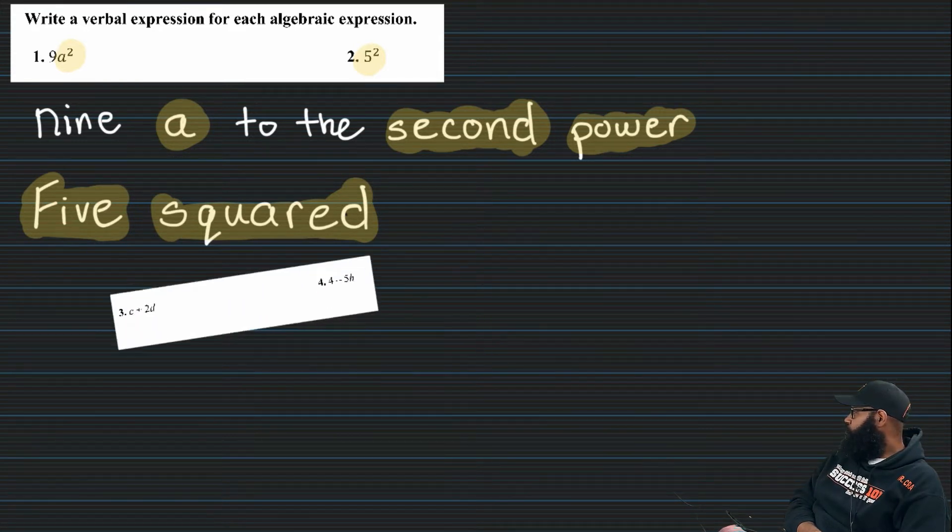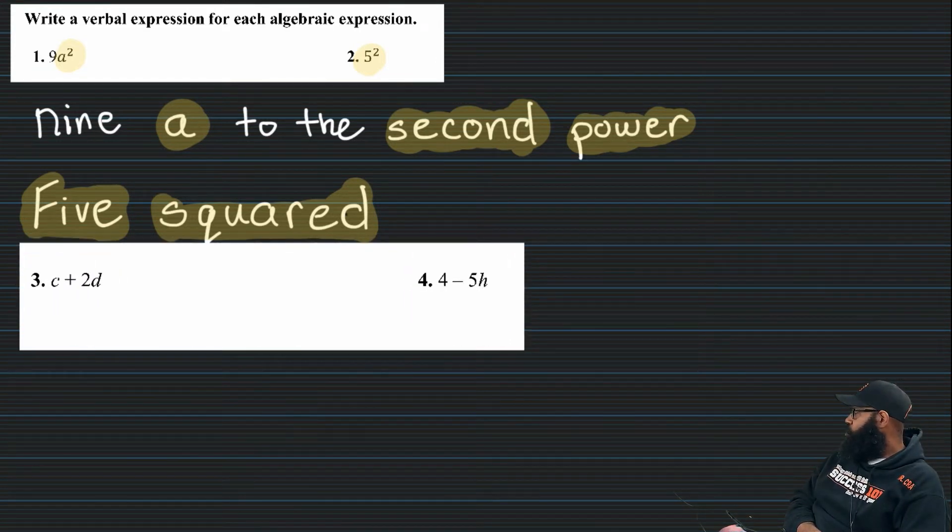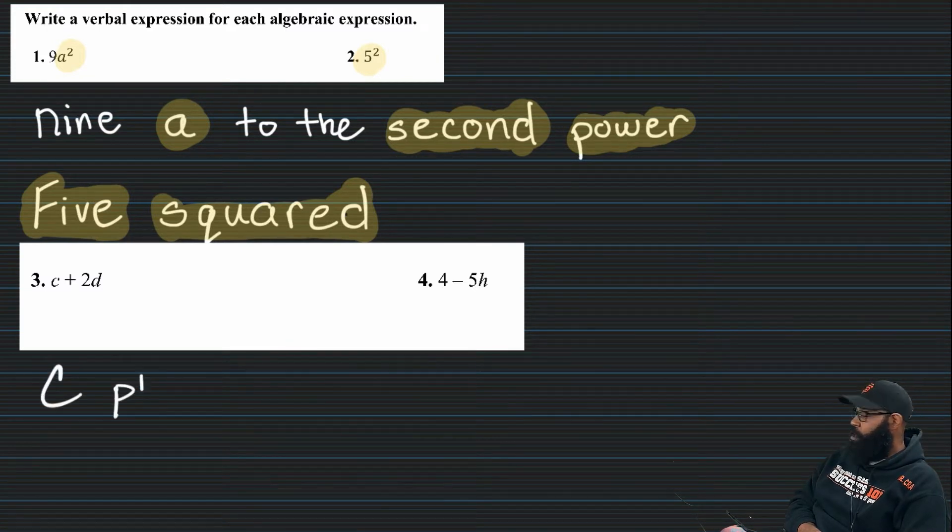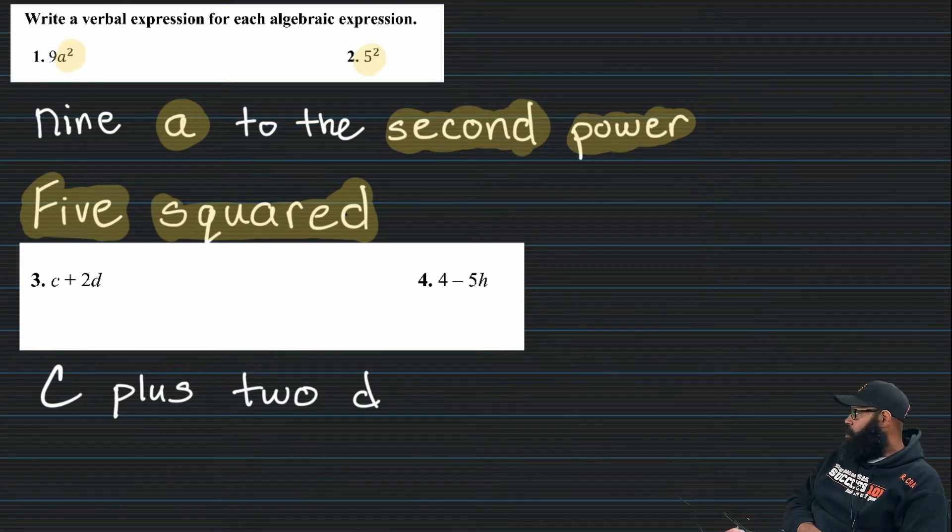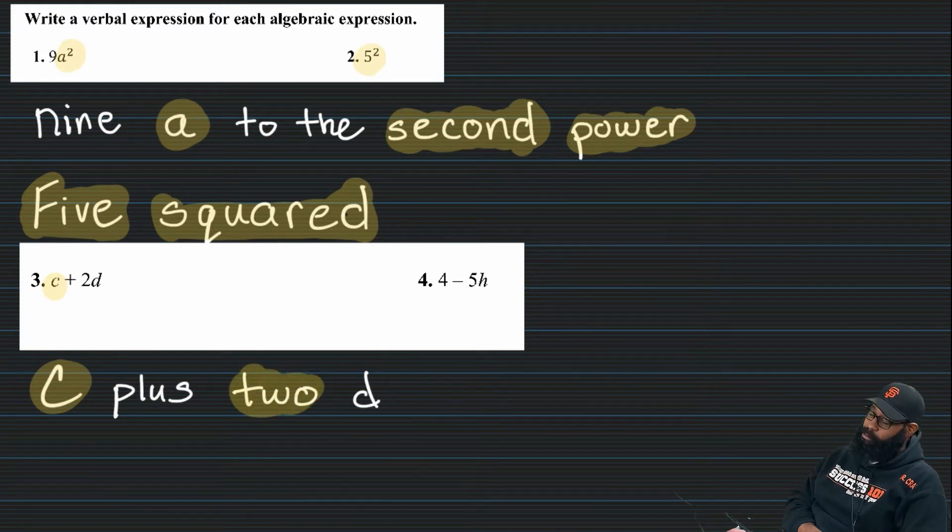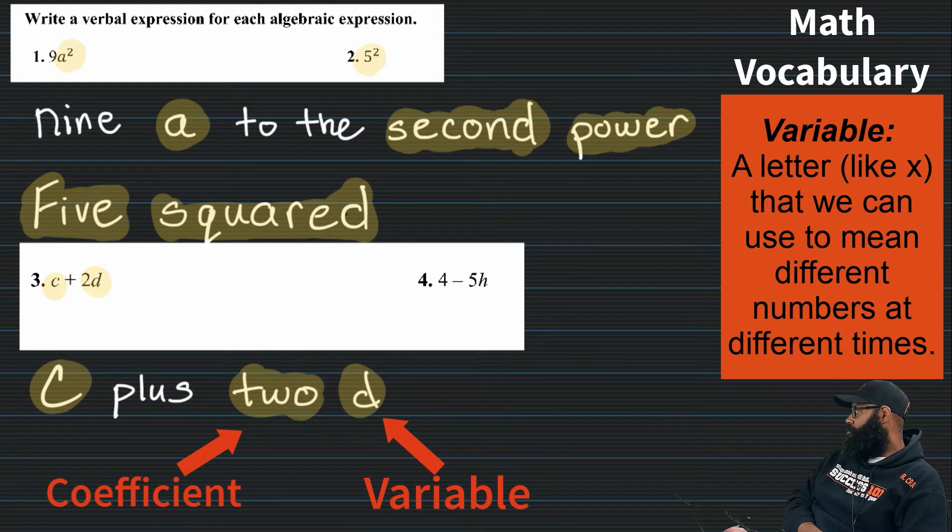And here comes number three and four. C plus 2D. And I clearly recognize the operation. Plus. C plus 2D. And that's it, right? Making sure you got the operation, the variable, and that you did it right. So we're going to go ahead and highlight the variables in this one. C and your coefficient 2 and your variable D. Got to love vocabulary.